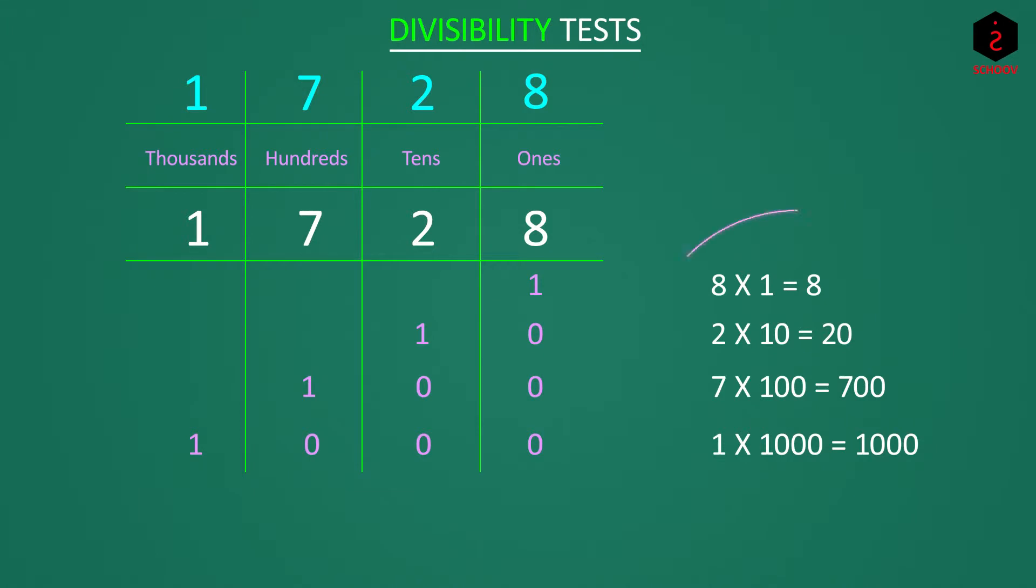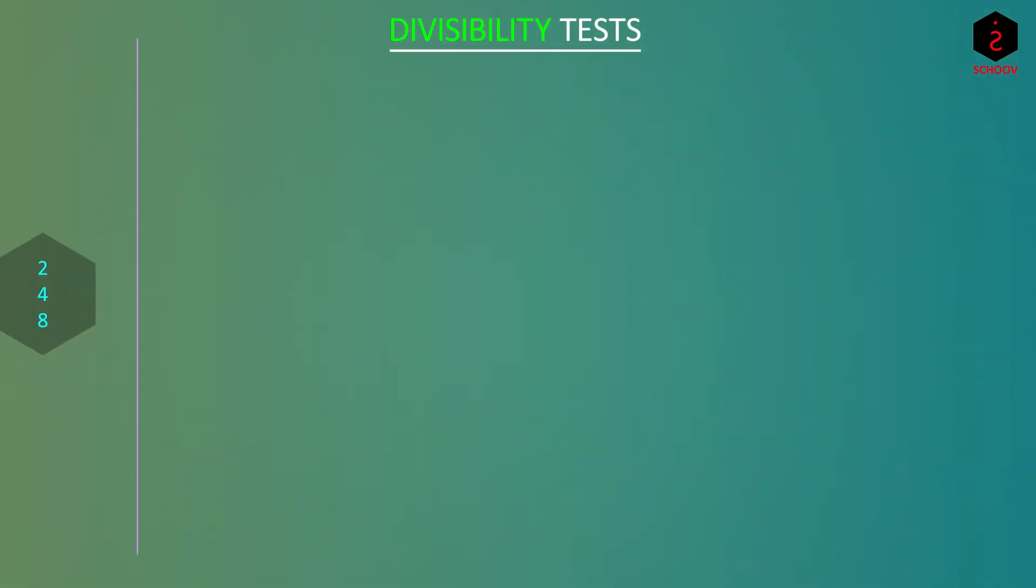So obviously if we add these place values, we should get the actual number. And we do. 1728 can be written as 1 x 1000 plus 7 x 100 plus 2 x 10 plus 8 x 1. Let's keep this concept in mind.